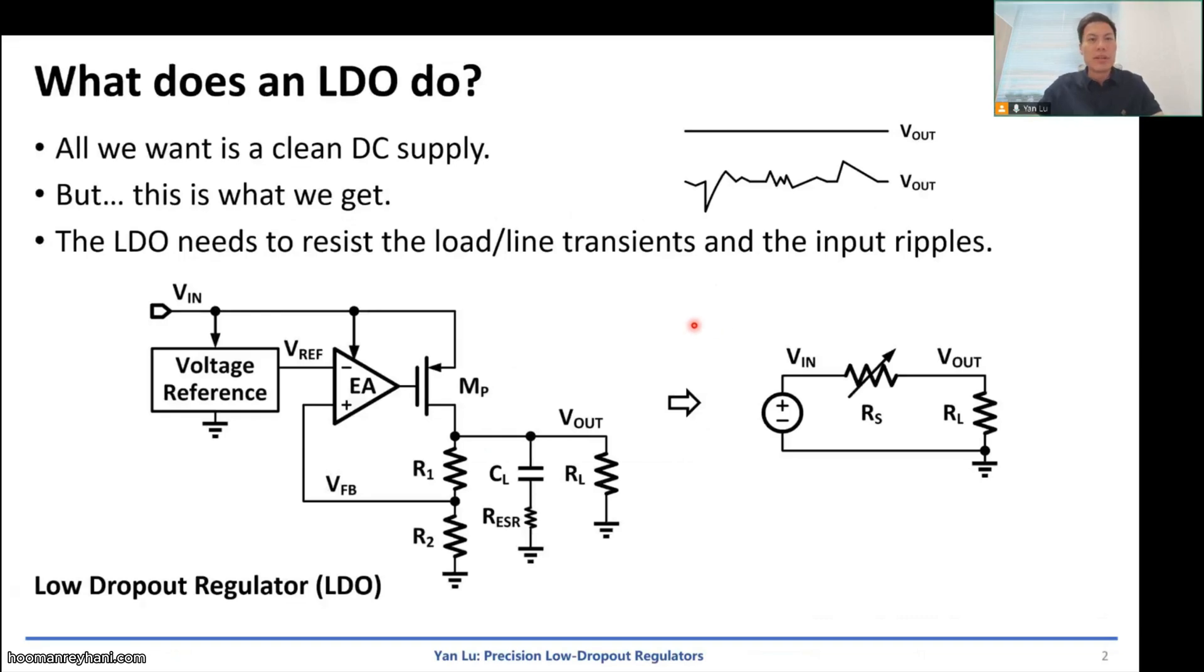So what does an LDO do? Ideally we want a very clean DC supply, like a straight line, but this is what we get because the power supplies will suffer from the line transient, the load transient, the input ripples. So basically an LDO needs to provide a very clean supply to reject the input ripple and to resist the line and the load transients.